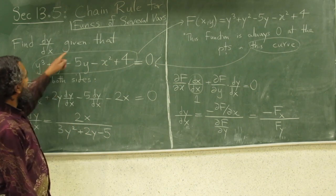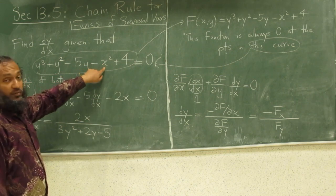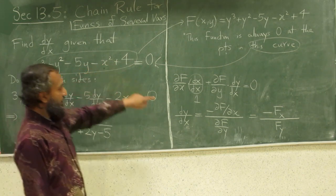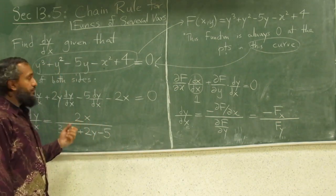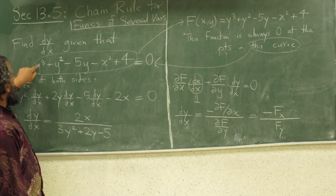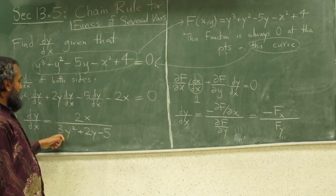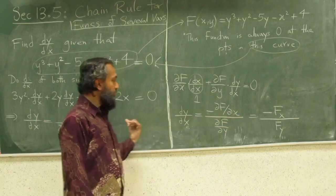And we can verify that. The derivative of this function with respect to x, the derivative of x is just negative 2x, so negative negative 2x is 2x. The derivative of this function with respect to y is 3y squared plus 2y minus 5, 3y squared plus 2y minus 5, so indeed, this formula will help you there.